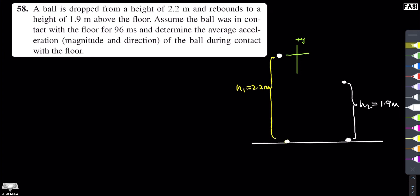We can calculate the velocity with which the ball hits the ground. Since acceleration is the change in velocity, we will use the equations of motion. For the first part — the ball falling — we can use the second equation of motion to find the time taken to fall.